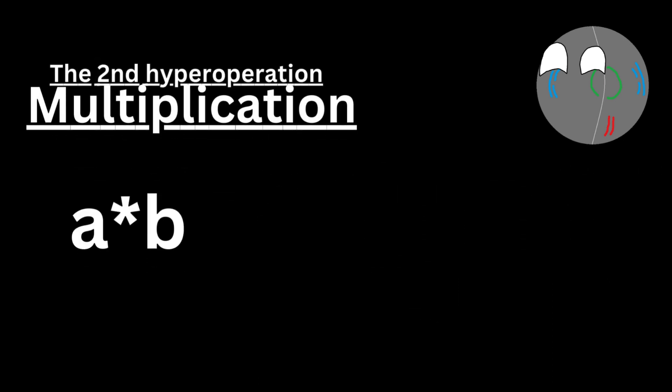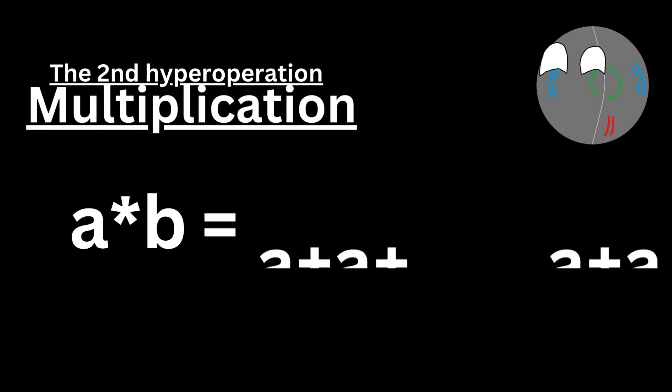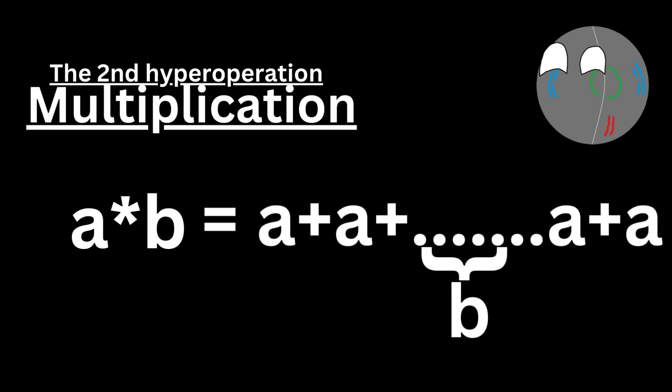Next is the second level of hyperoperation: multiplication. Multiplication is just repeated addition. Taking our two variables again, a times b is equal to a plus a plus a... b number of times. Multiplication also follows the commutative and associative properties.